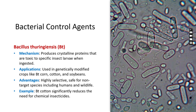Bt is used in genetically modified crops like Bt corn, cotton, and soybeans, significantly reducing the need for chemical insecticides. It is highly selective, meaning it targets only pests, leaving humans, animals, and other non-target species unharmed.